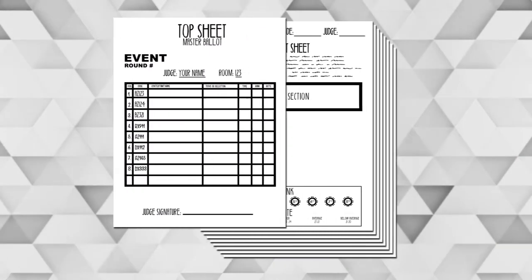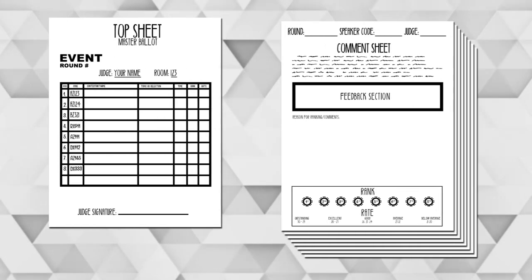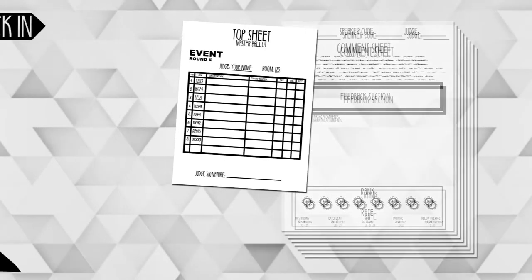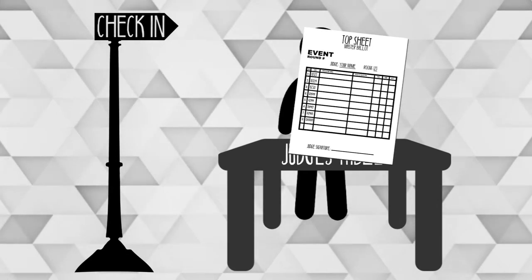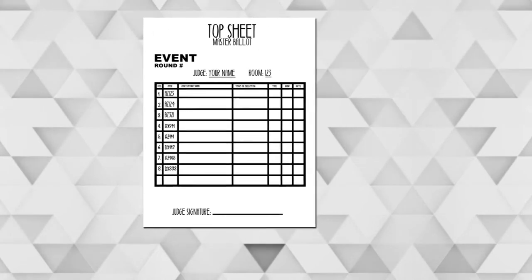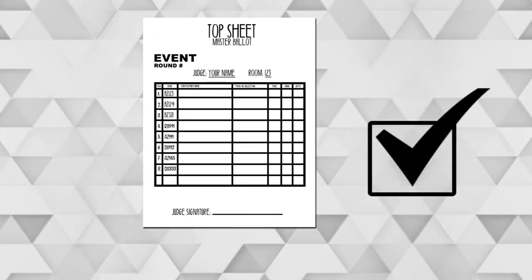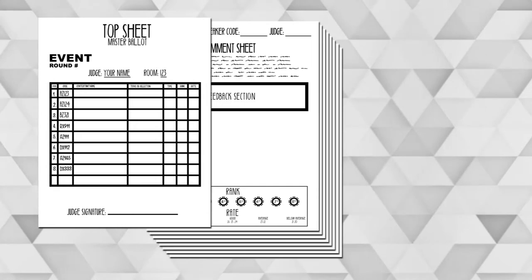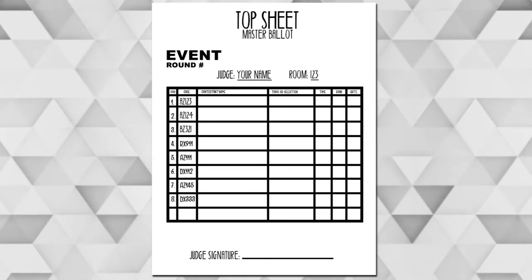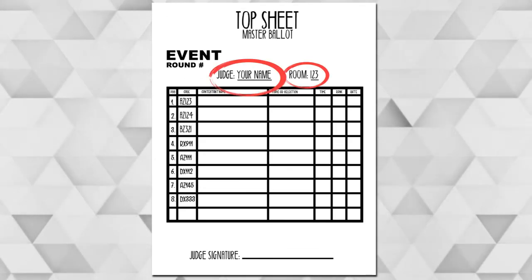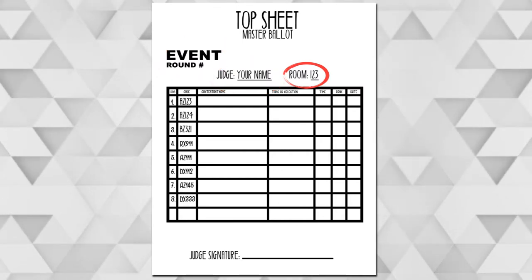You will all receive a ballot packet. The top page is the official ballot. The following pages are comment sheets for the individual competitors. It is crucial that the top sheet is brought back to the check-in table as soon as possible. We cannot keep the tournament running on time without quick return of the ballots. After you turn in the top sheet, you may spend as much time as you wish providing feedback on the comment sheets. The top sheet will have your name, room number, and event. Please ensure that you are in the correct room.